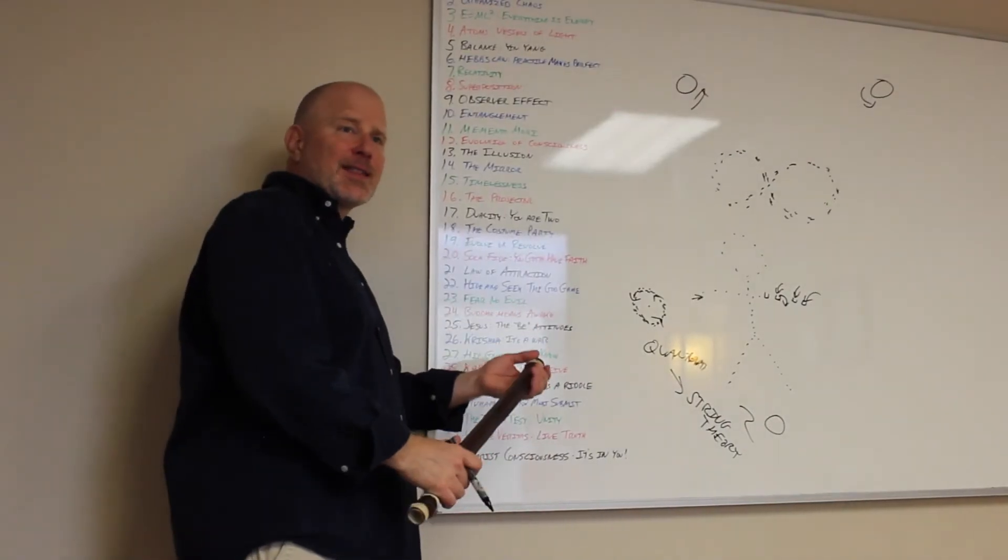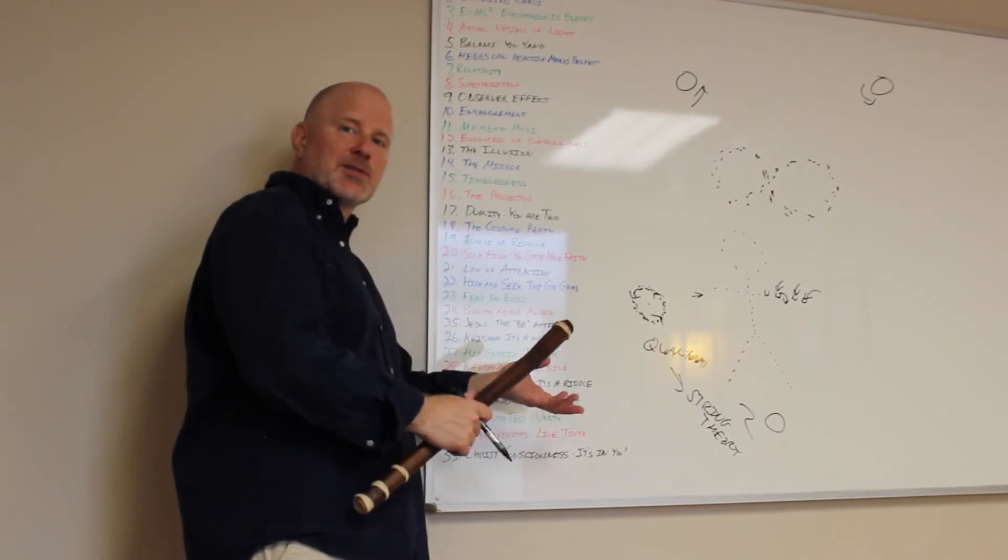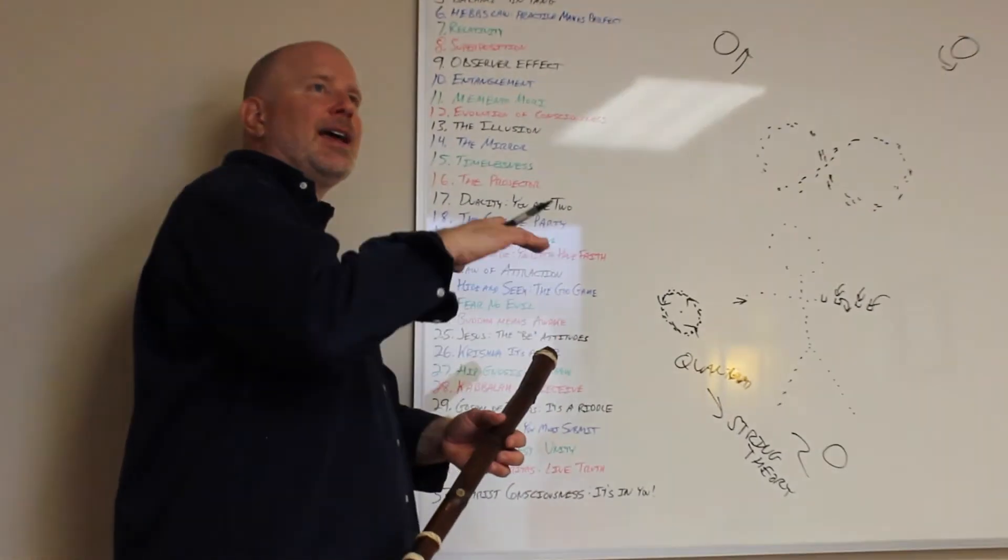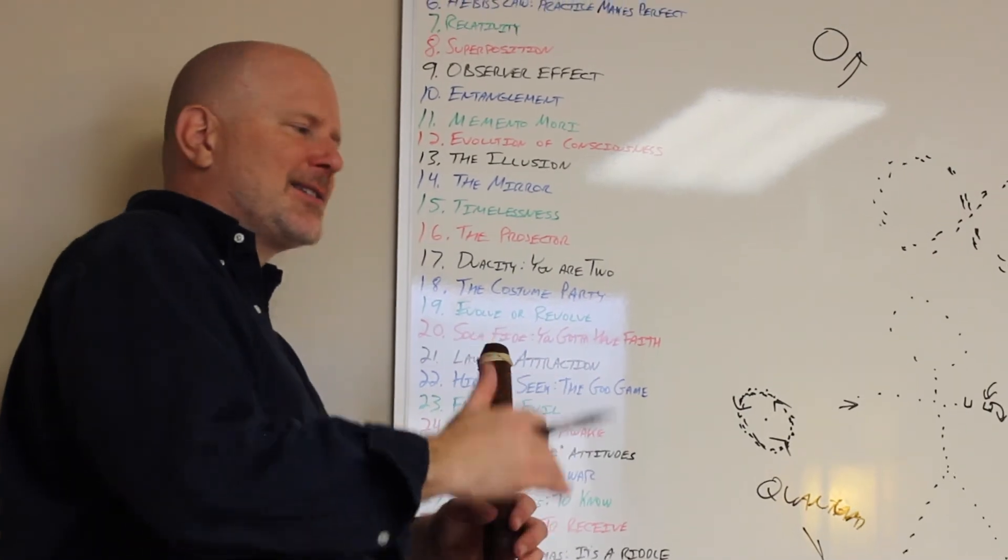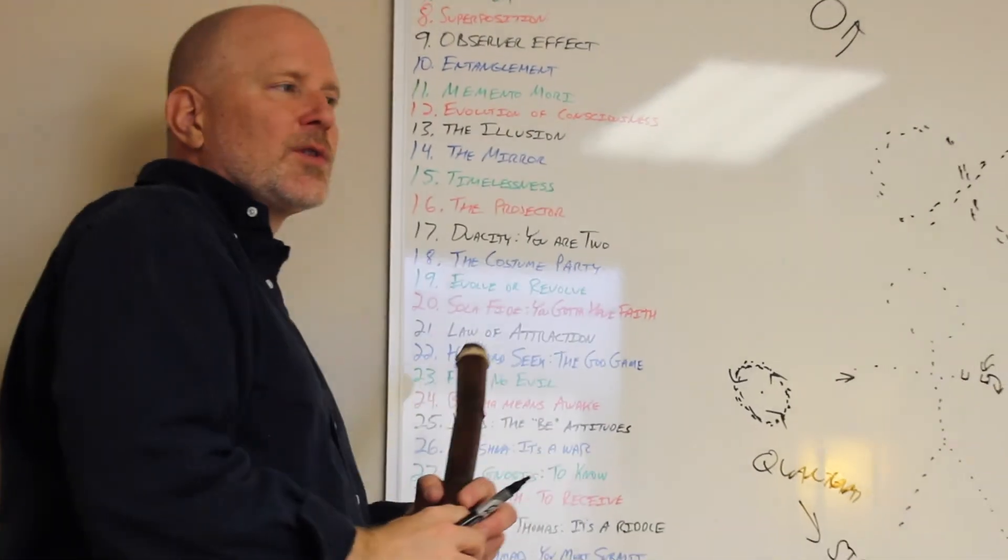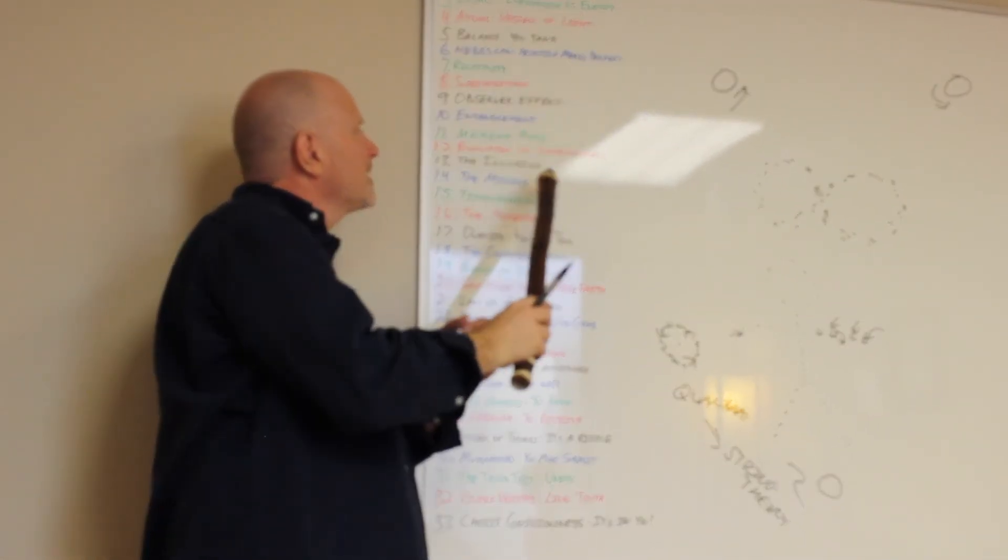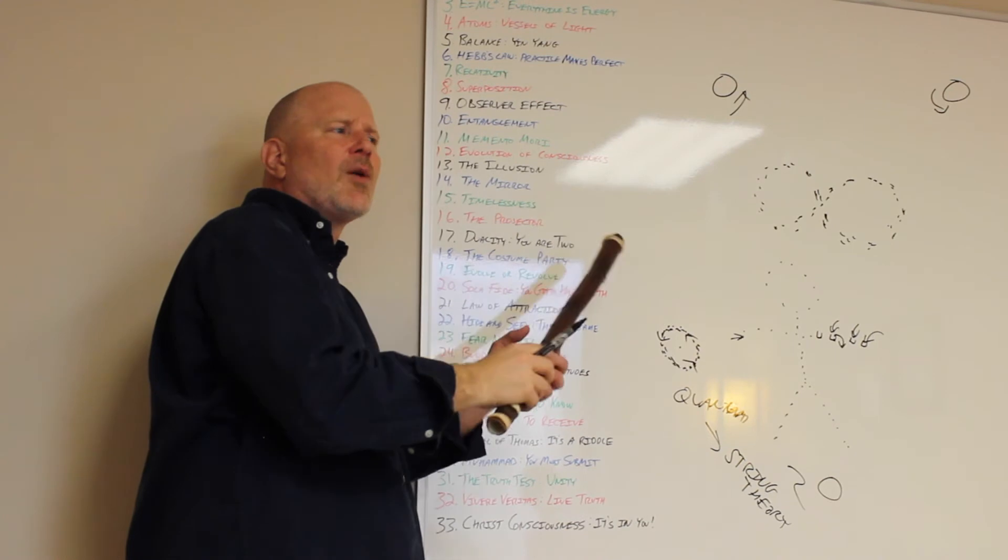People think that the world is physical and we're here to do physical things. The fact is, it's a spiritual world. We're spiritual beings having a human experience and the world is a footstool to step up higher to the soul aspect of things. That's why the world's an illusion. Everything is energy. Einstein demonstrated everything is energy. The world is not what we think it is.